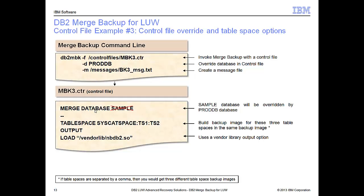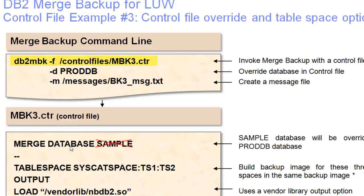Here's a control file that shows how you do overriding. So db2mbk minus f invokes the control file, but you can override the database. So even if your control file is merging the sample database, you can override that with a proddb database. This control file becomes a template of sorts, so you don't have to write multiple copies — you can simply override some keywords, like the database or a message file that was not indicated in the control file but is indicated here at the command line.